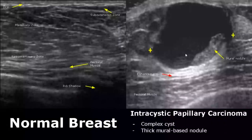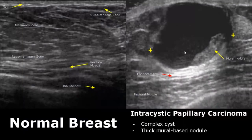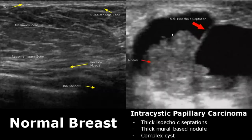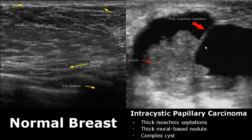Intracystic papillary carcinoma consists of a complex cyst with a thick mural-based nodule. This nodule will be attached to the wall and will not move around. Here is another image of intracystic papillary carcinoma which has a thick isoechoic septation as well. These thick isoechoic septations are usually a sign of malignancy, as opposed to thin hyperechoic septations which are usually benign. Here is a large thick mural nodule.